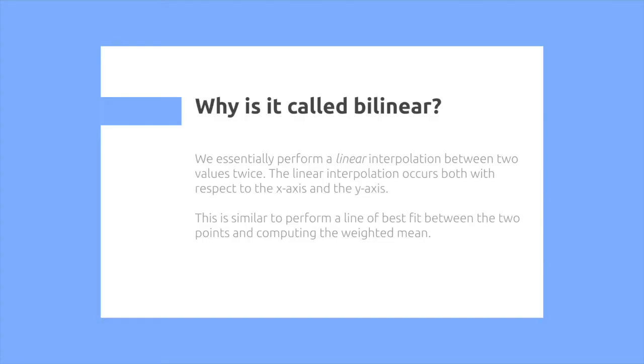So why is it called bilinear? Well we essentially perform the linear interpolation between two values twice. We did this first on the x-axis and the y-axis. This is similar to doing a line of best fit between two points and computing the weighted mean.